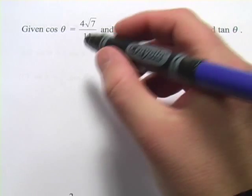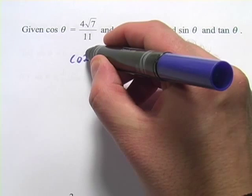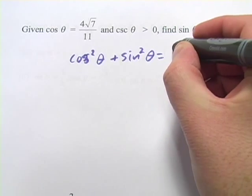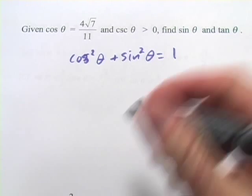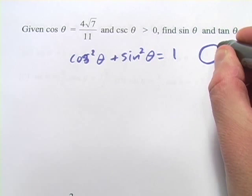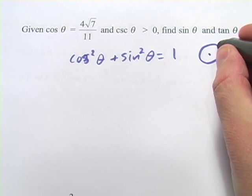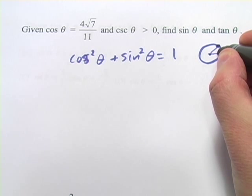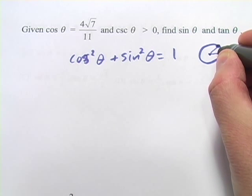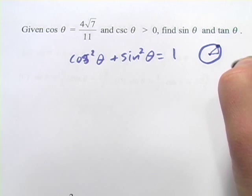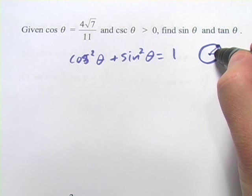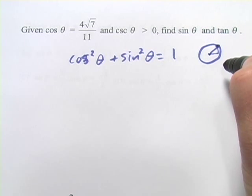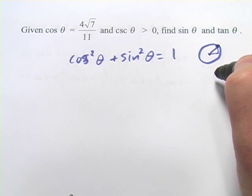You actually need this formula: cosine squared of theta plus sine squared of theta equals 1. Where does that come from? If you think about the unit circle — a circle with radius 1 — and we've got a point, the x value would be the cosine (the length of one side of the triangle) and the y value would be the sine. This is a right triangle, so cosine squared plus sine squared equals 1, the hypotenuse, because this is a unit circle. It actually comes from the Pythagorean theorem.